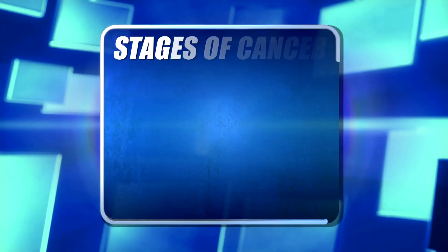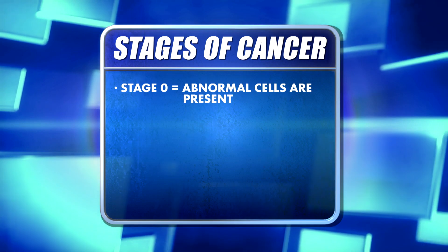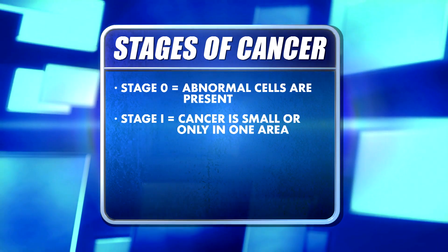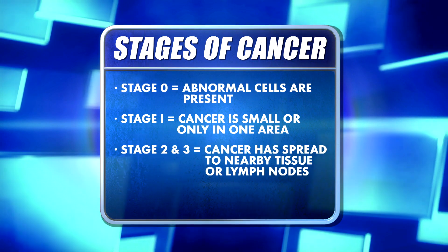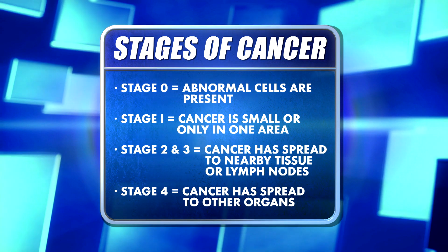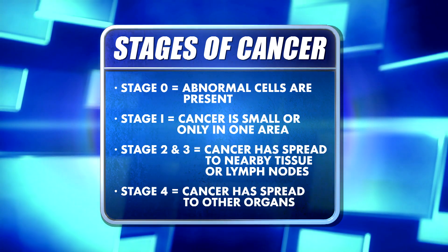Stages are usually described in five stages. Stage 0 is when abnormal cells exist in the tissue but have not spread to surrounding tissue — these cells may not be cancerous, but they may become cancerous. Stage 1 means the cancer is small or only in one area. Stage 2 and 3 is when it's larger and has spread to nearby tissues or lymph nodes. Stage 4, also known as metastatic cancer, is when the cancer has spread to other organs.